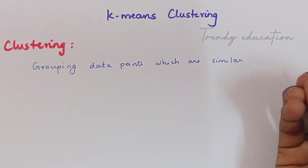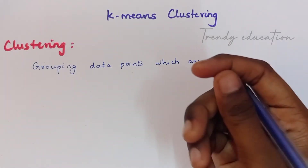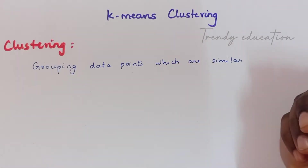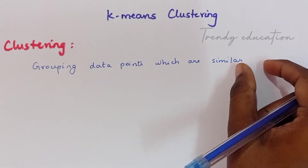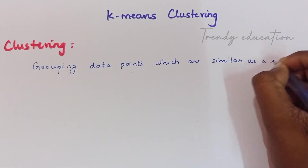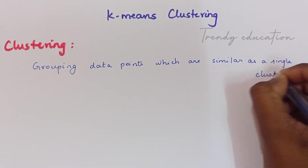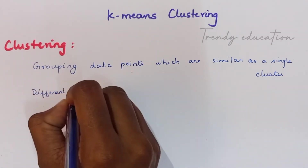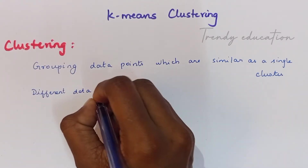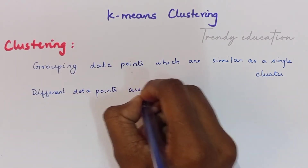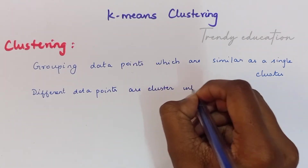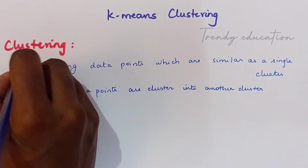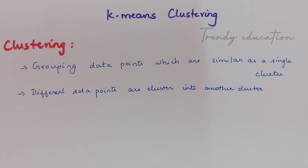Whenever objects are different from each other, they are clustered into another cluster. So clustering is grouping the data points which are similar as a single cluster, and different data points go into another cluster. This is what clustering means in data mining.